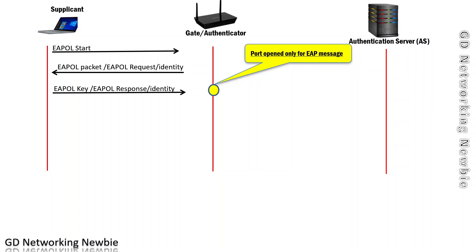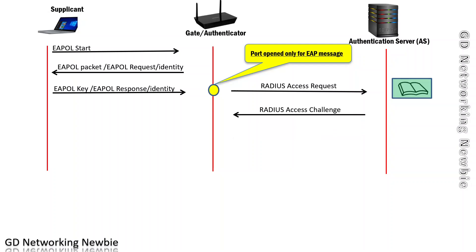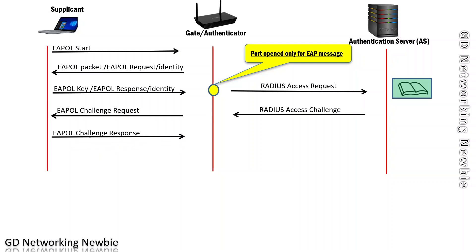The username received by the authenticator is forwarded to the authentication server. The authentication server looks into its database, and if the username is found, it sends an access challenge message — for example, asking for a password. The authenticator forwards this as an EAPOL challenge request to the supplicant, and the supplicant responds with its password. The authenticator then forwards that password back to the authentication server.